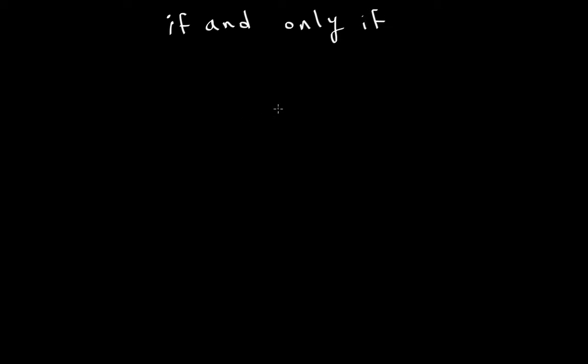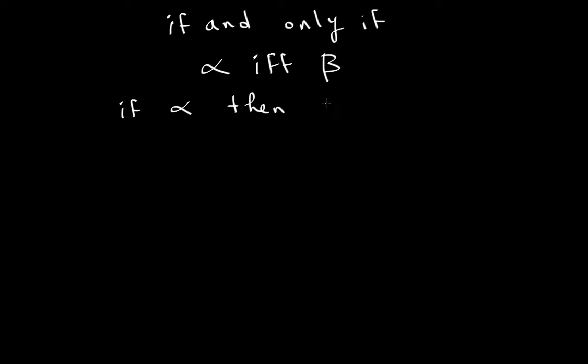The key takeaway for if-then statements is that the only combination that makes the whole statement false is if the premise is true and the conclusion is false. Now let's do if-and-only-if statements. This is normally abbreviated to 'iff' — written with a double f. And normally you would write: alpha if and only if beta. This is equivalent to writing alpha with a double-sided arrow to beta.